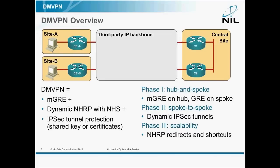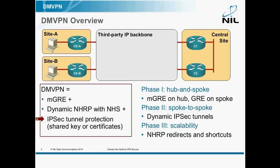First, a very brief overview of what DMVPN really is. It's really a nicely engineered mixture of three time-tested technologies. MGRE has been with us for at least 10 years, if not more. NHRP and NetOps servers have existed since iOS release 10.something. And IPsec tunnel protection is also a really old technology. Nothing new on its own.